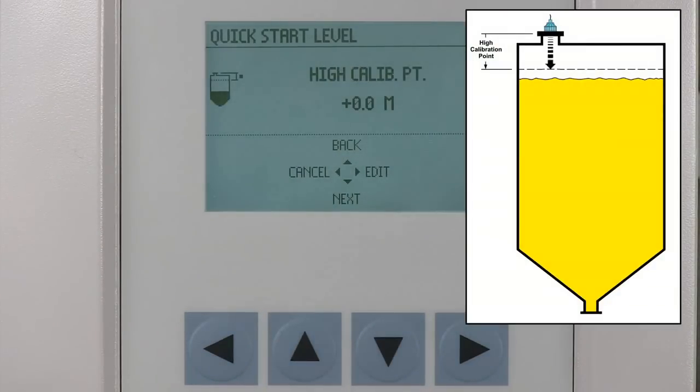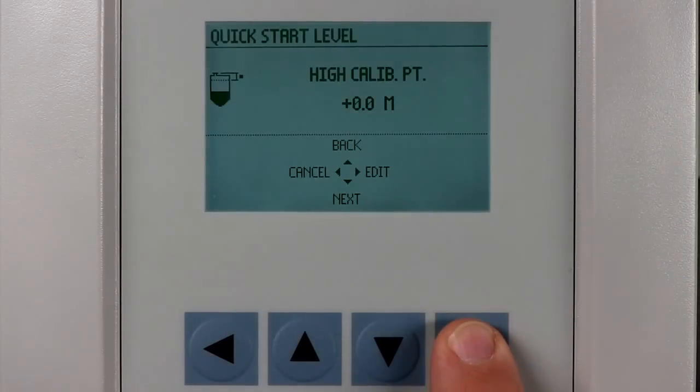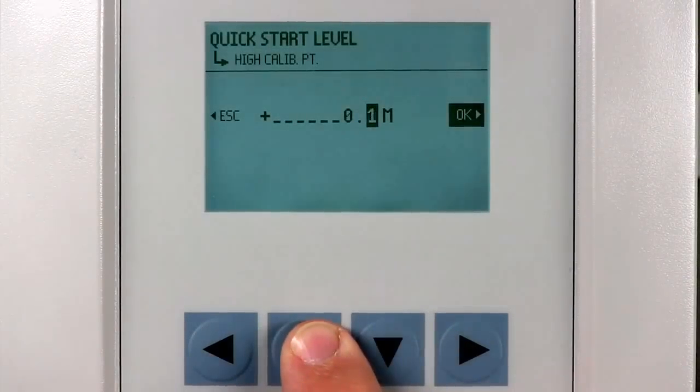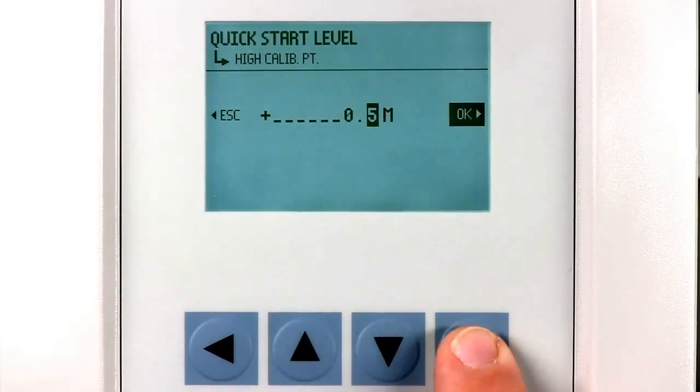The high calibration point is the distance from the transducer face to the highest point the material level will reach under normal operating conditions. We will enter a value of 0.5 meters in this parameter.